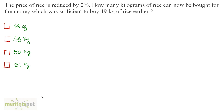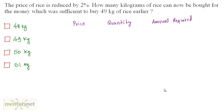The price of rice is reduced by 2%. How many kilograms of rice can now be bought for the money that was sufficient to buy 49 kg of rice earlier? Let us put it this way — we have the price, the quantity, and the amount required.